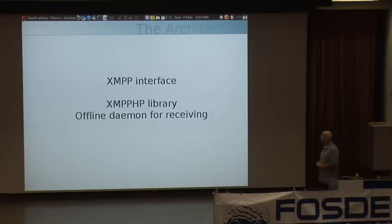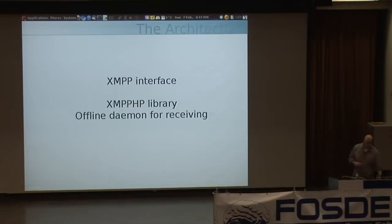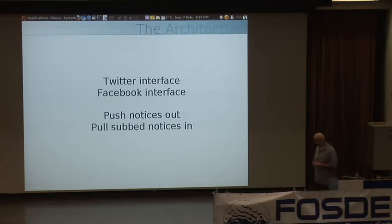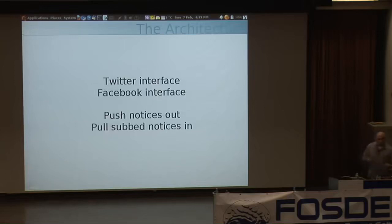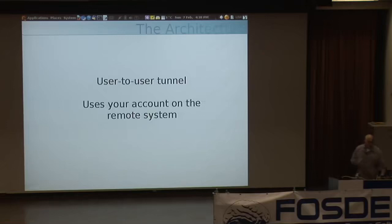We have an XMPP interface, effected using the XMPPHP library. We have an offline daemon that receives messages from people using XMPP/Jabber and gateways those into our system. We have a Twitter interface and a Facebook interface — very important to be plugged into the existing social networks. We push notices out into those networks. If you post on your own StatusNet system, it pushes out to Facebook and Twitter. You can also pull subscribe notices back into your system. It's a user-to-user tunnel requiring accounts on those remote systems.